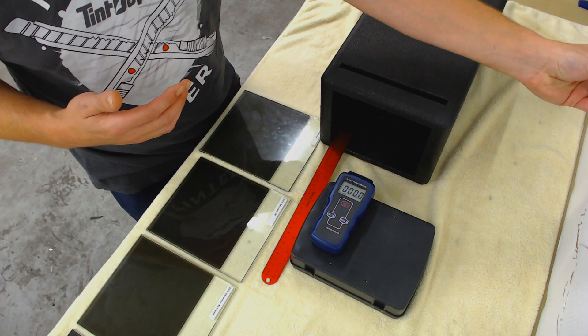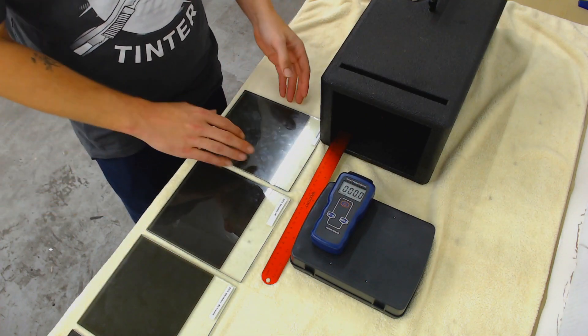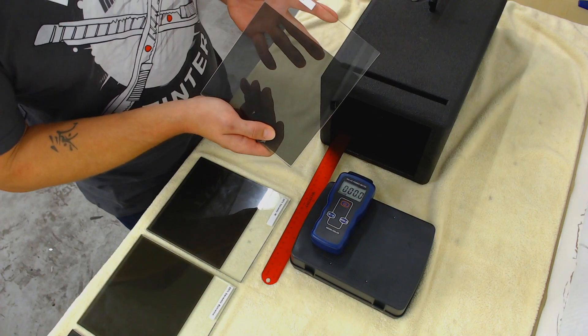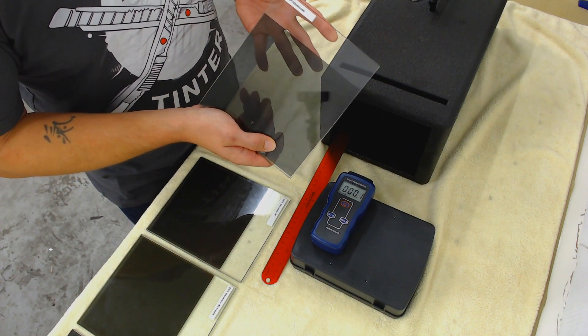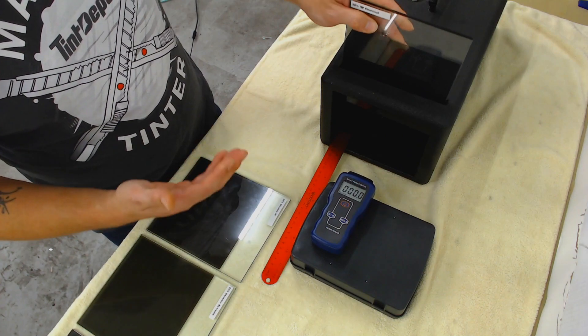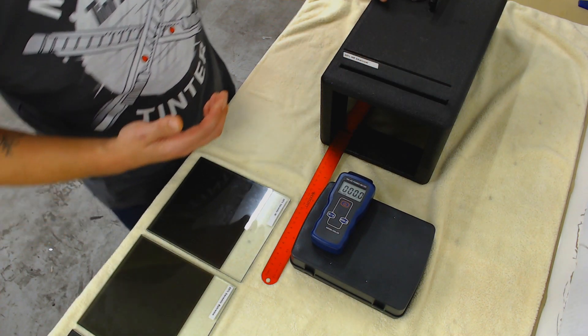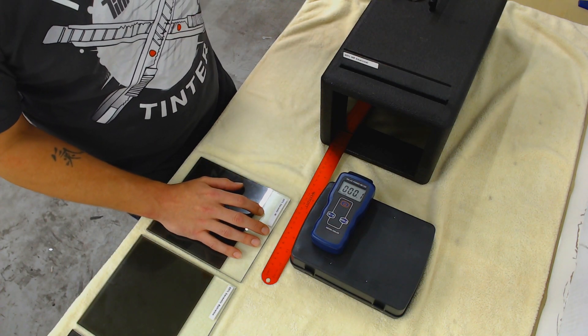So let's move into the films that actually do have some heat blocking capabilities in it. This is their metalized film, again, a premium lifetime warranty film, 20% HP charcoal, metalized. So it does block some heat. So we'll put that in. We'll tint that driver window with it. Let's put it to the test.